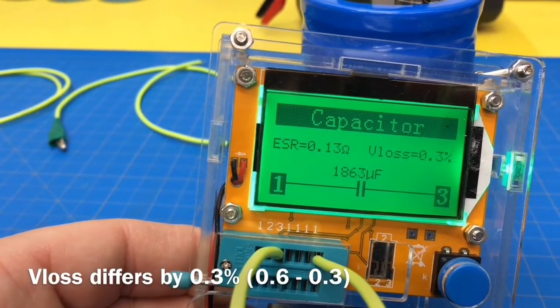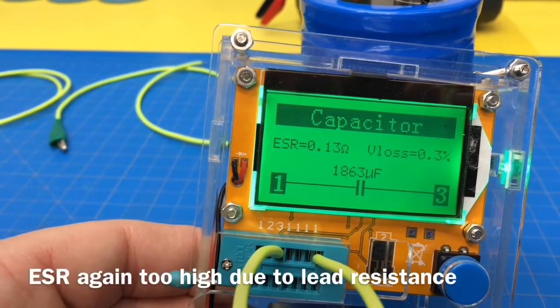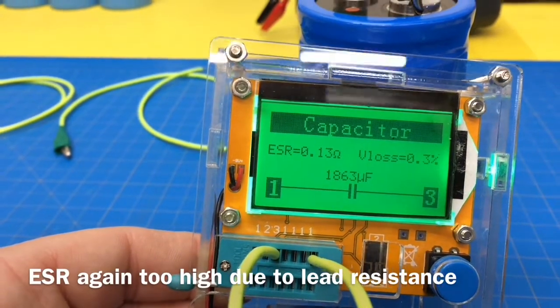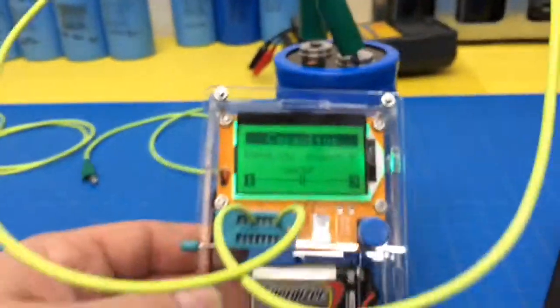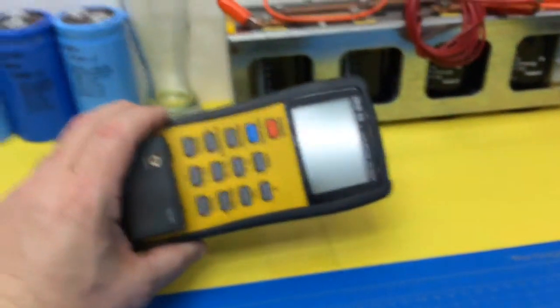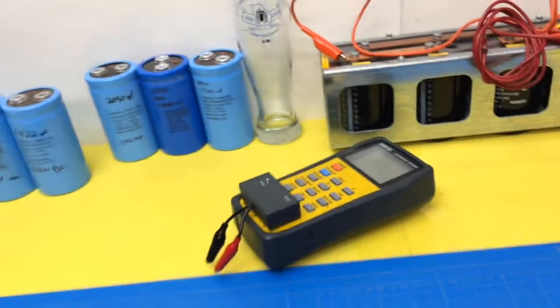V loss 0.3, 1863, and so it's pretty similar. So I'll be curious once we can make this work, what we'll find.